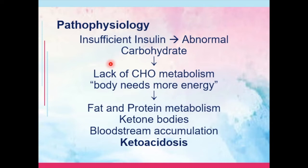Let's try to understand the pathophysiology of diabetes mellitus. The problem is that there is insufficient insulin. Because of this, there will be abnormal carbohydrate levels — an increase of blood sugar levels in the bloodstream. However, because of the lack of insulin, the sugar in the bloodstream cannot be properly metabolized. Due to the failure of glucose to be metabolized, the body perceives that it needs more energy, and would opt for other sources such as fat and proteins. Due to fat and protein metabolism, ketone bodies would occur, as the byproduct of fat metabolism is your ketone bodies.